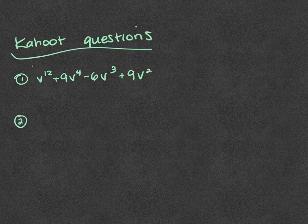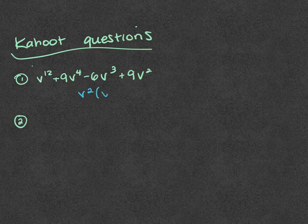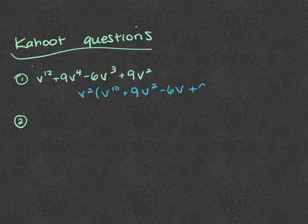I'm actually going to work these questions out on the video that's going to go to YouTube. But just so you know, if you take out the v to the second, then you have to subtract the exponents, right? So it'd be v to the 10th plus 9v squared minus 6v plus 9, which would have been d.